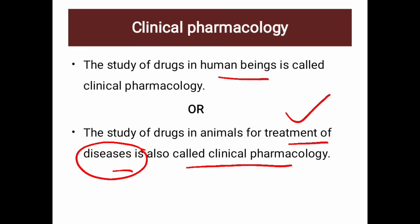When the study of drugs involves human beings, it is called clinical pharmacology. If you need to study a drug for human or animal disease treatment, you need clinical pharmacology; otherwise, basic pharmacology applies.